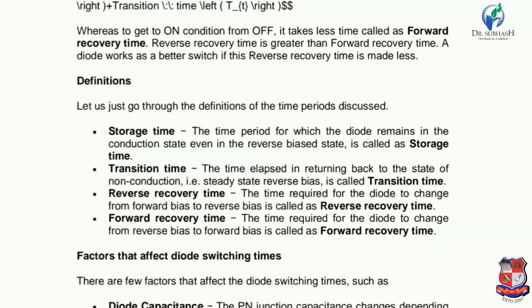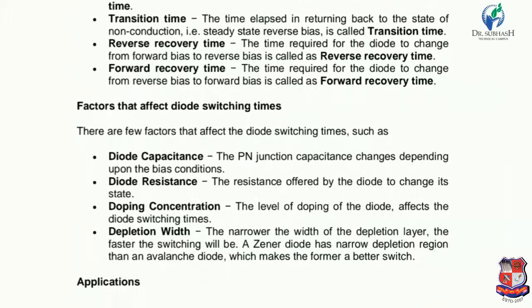Now let us discuss the factors that affect diode switching time. There are a few factors that affect the diode switching times. There are 4 major factors: diode capacitance, diode resistance, doping concentration, and depletion width. Let us understand these one by one. First is diode capacitance — the PN junction capacitance changes depending upon the bias condition.